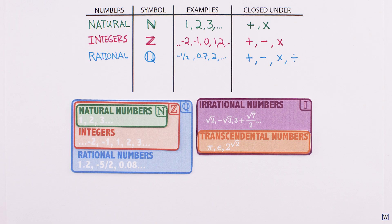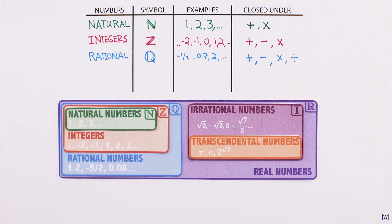So we've expanded our number system again to include irrationals, and all these numbers taken together form what we call the real numbers.